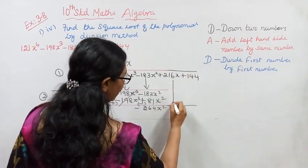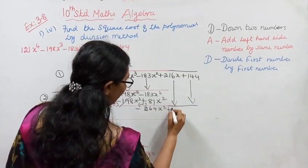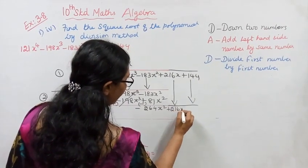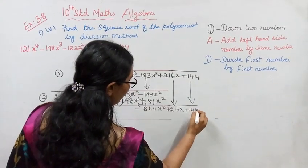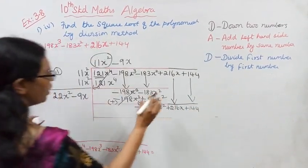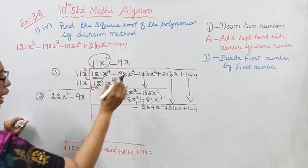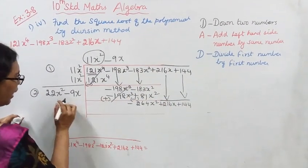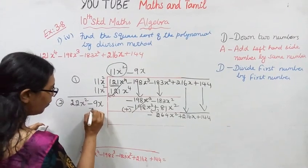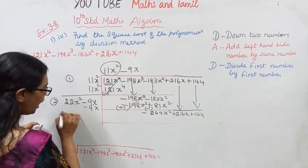Down to numbers. Down to numbers: +216x + 144.